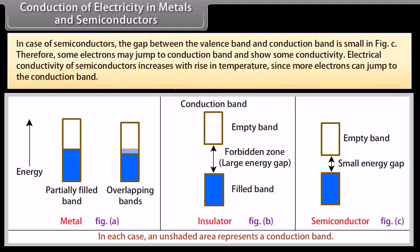In case of semiconductors, the gap between the valence band and conduction band is small. In figure c, therefore some electrons may jump to conduction band and show some conductivity. Electrical conductivity of semiconductors increases with rise in temperature since more electrons can jump to the conduction band.